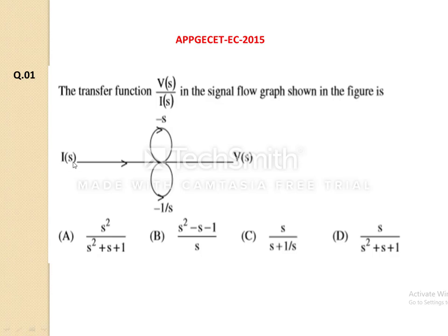The gain value of the forward path is 1, since no gain value is mentioned in the diagram — that means you should consider it as a unity gain. So T1, the gain of the first forward path, is 1. The given SFG has two self-loops: L1 with a gain value of minus s, and L2 with a gain value of minus 1/s.